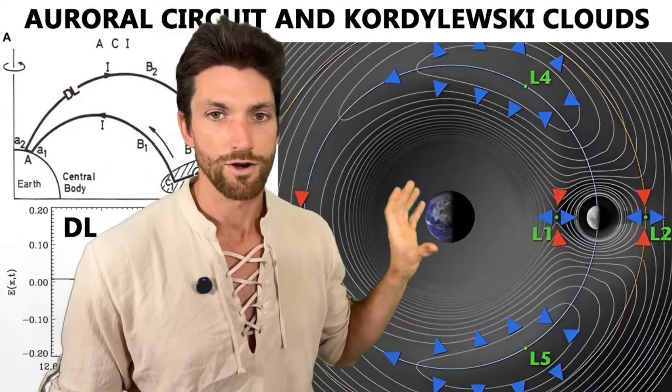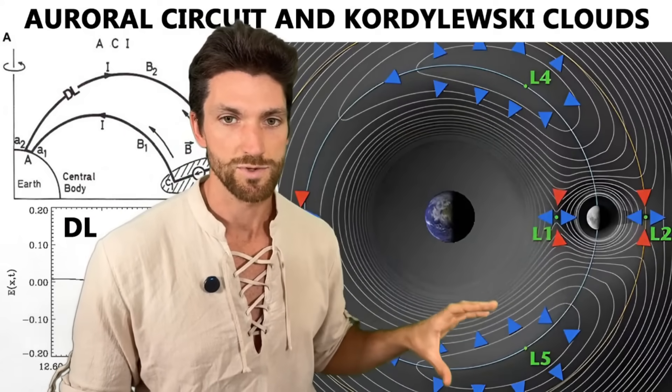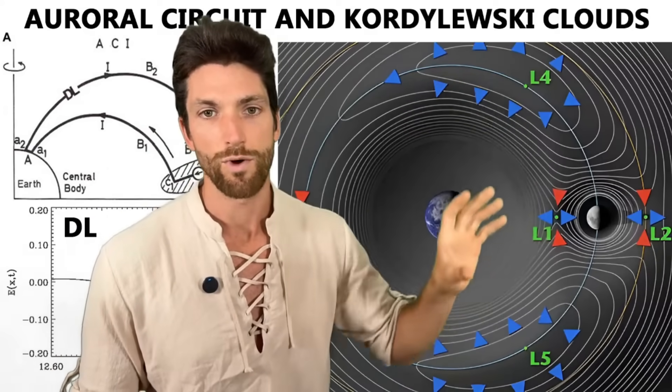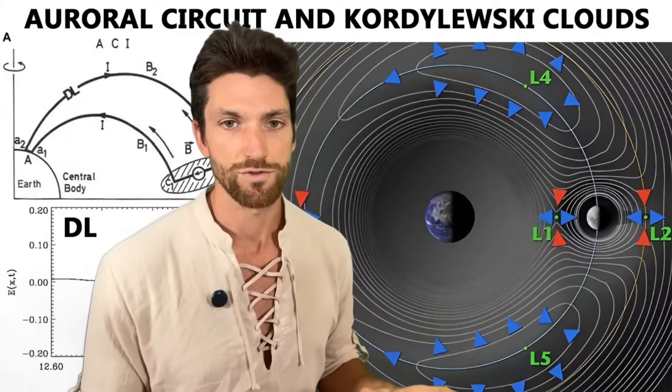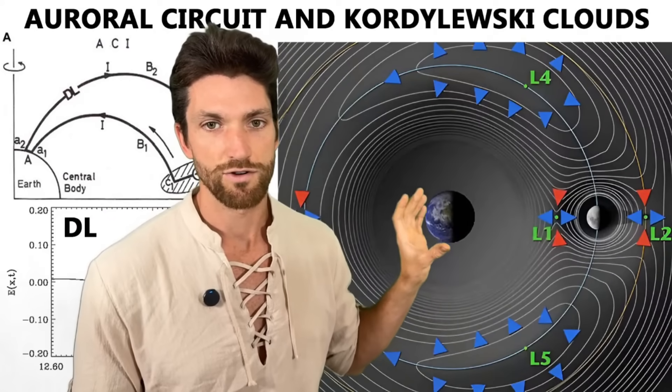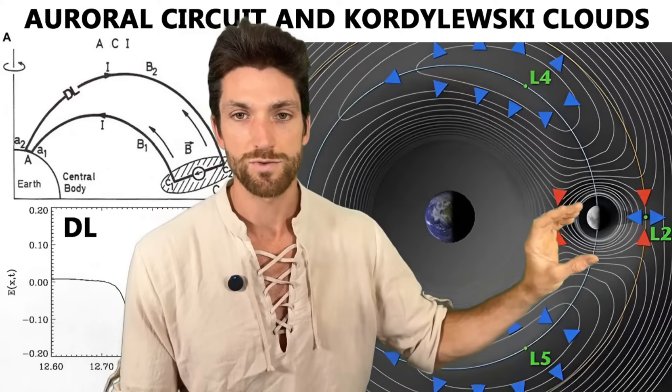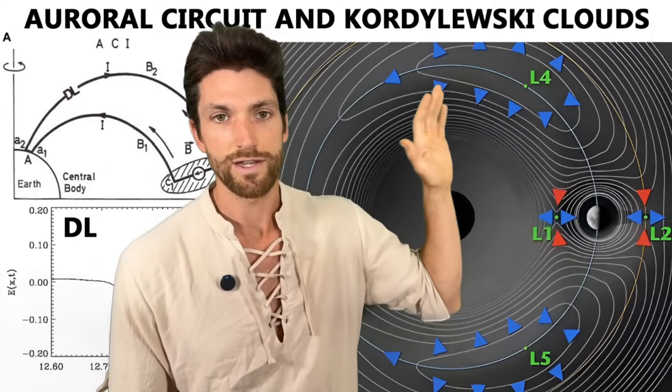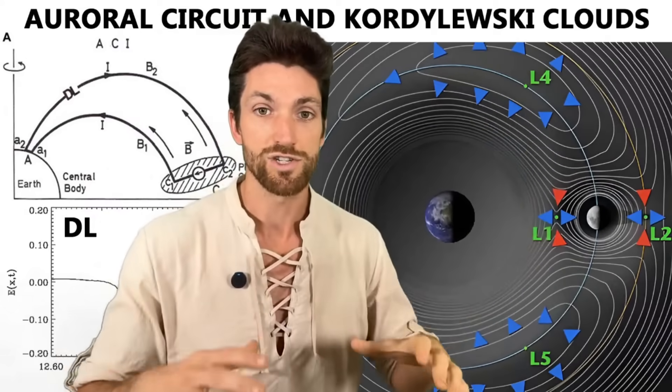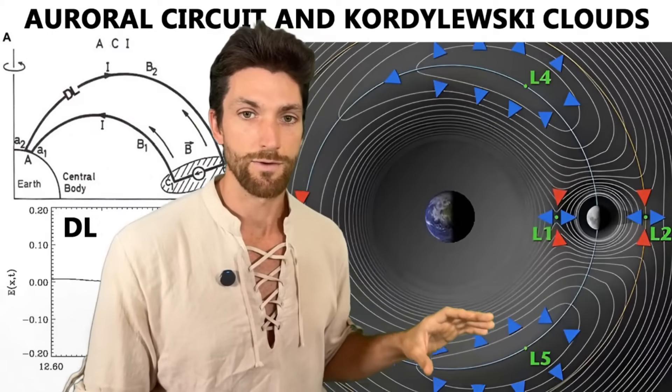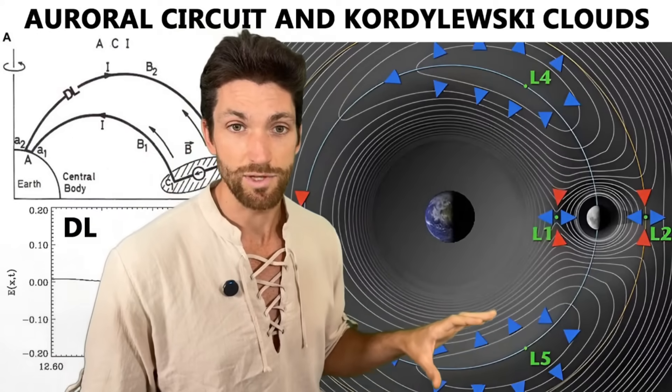created by the Earth-Moon system. So we have the L5 point, the L4 point. This is based on the gravitational force. So Earth has a very strong gravitational field. The Moon also has one, but you have these zones where gravity effectively diminishes greatly. And they were first observed back in the 60s, I believe.